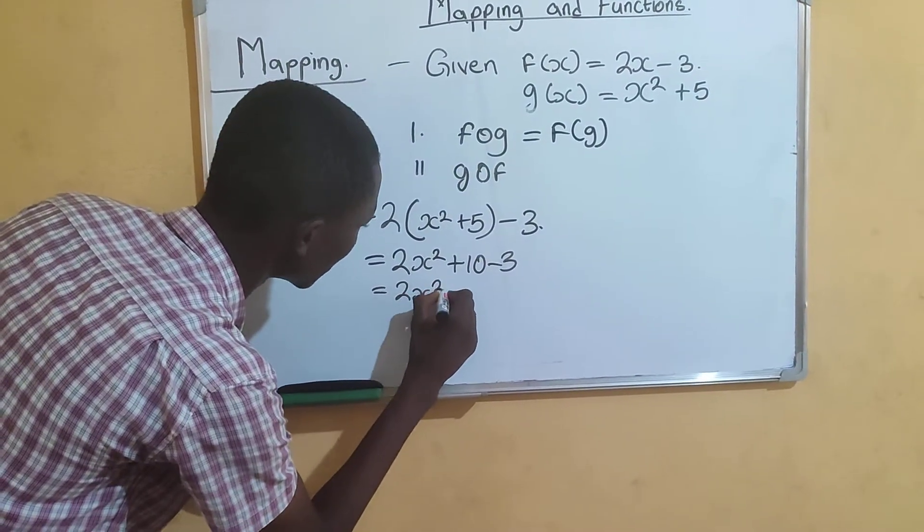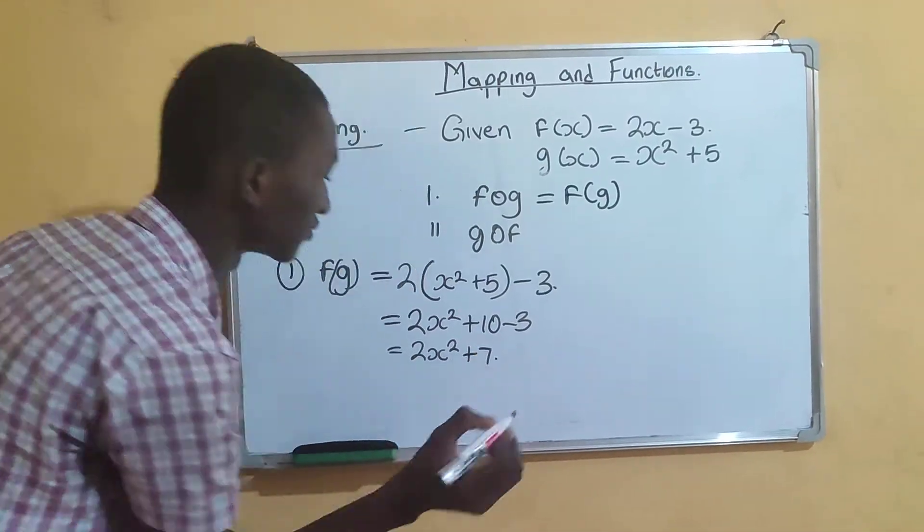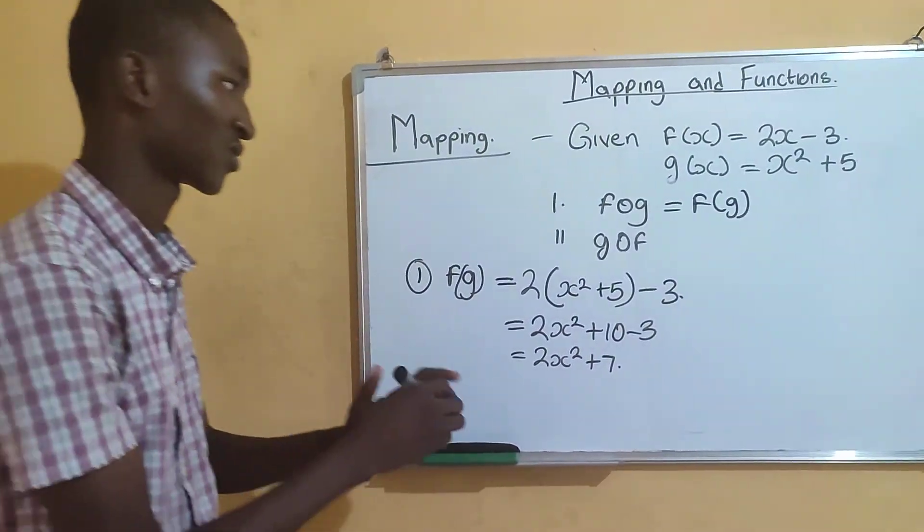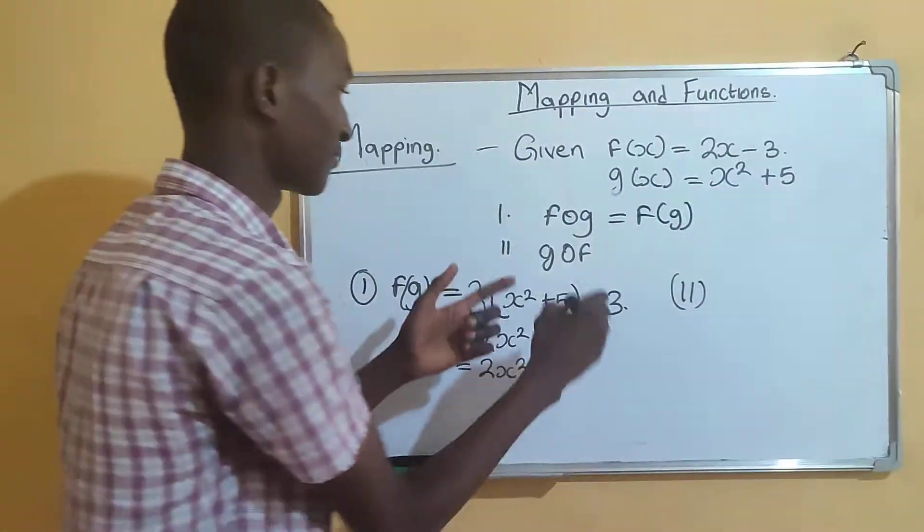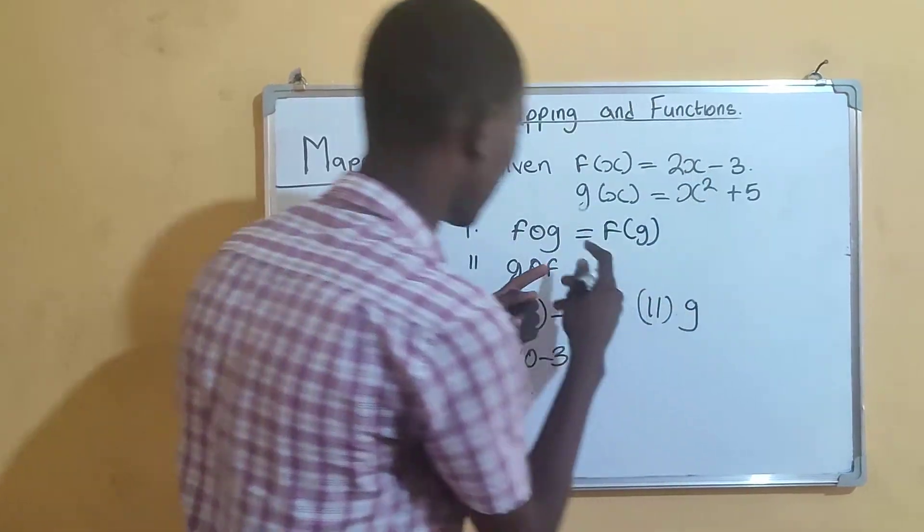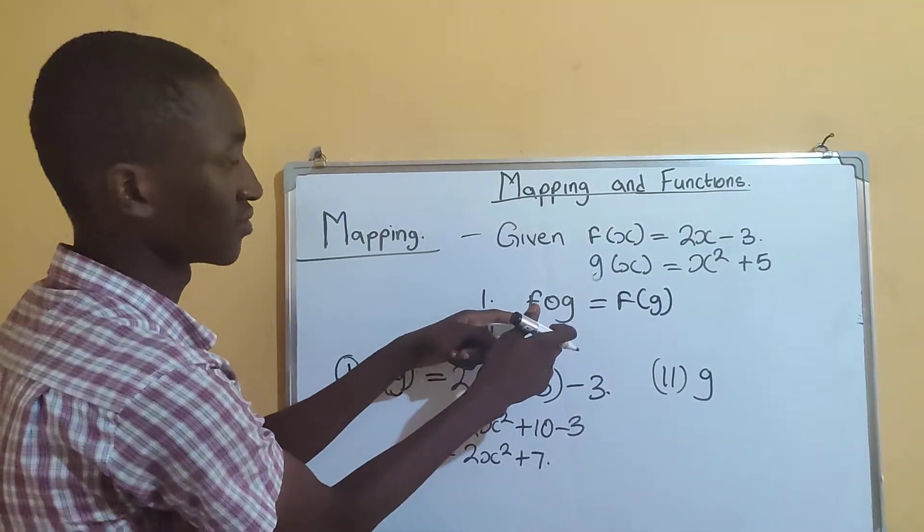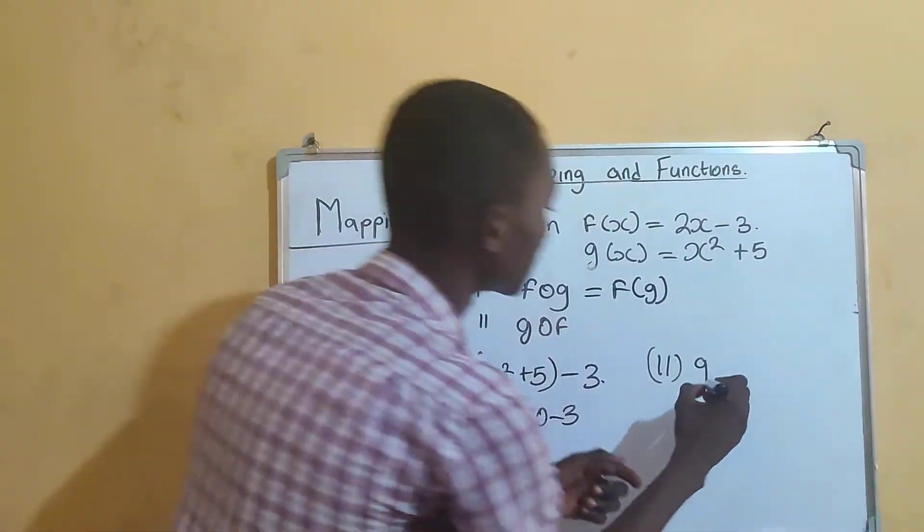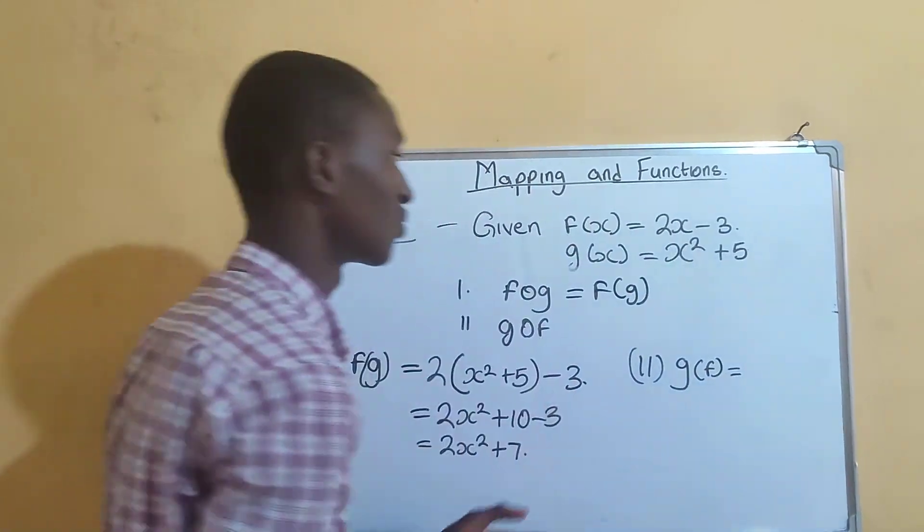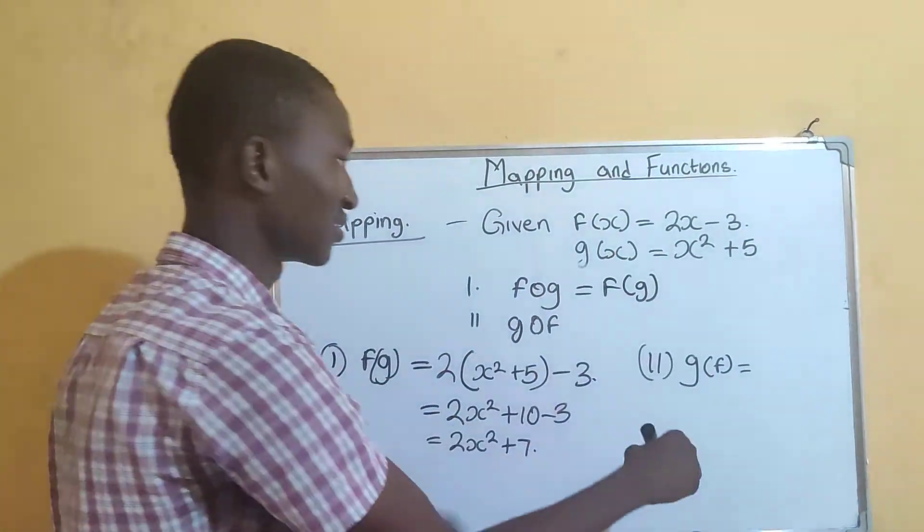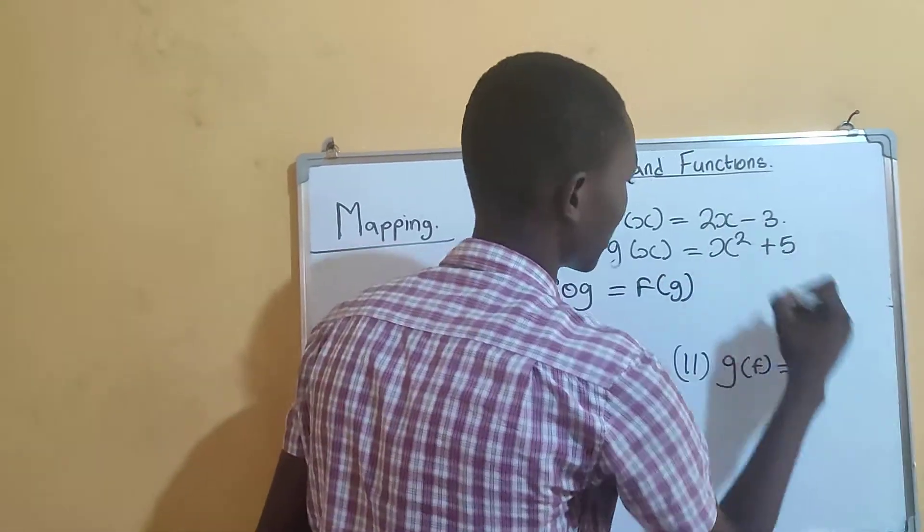For the second question, gof means you replace function f, or you replace x with function f in g. This one is the same as saying g of f, which is - this one is carrying square, so you open the bracket: 2x minus 3 all squared, that's the x, then plus 5.